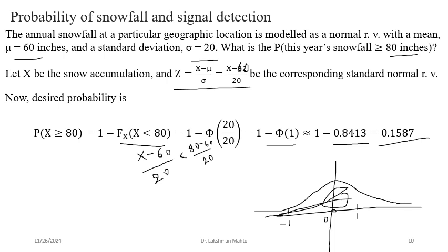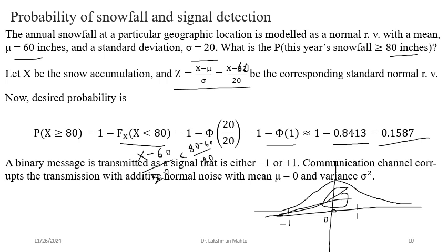To use the normal table: in the first column you find z-values (0.1, 0.2, 0.3...). For a value like 0.10, look in the second column of the row for 0.1. For 0.11, look in the third column. You walk horizontally along the row to find the desired decimal place.